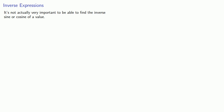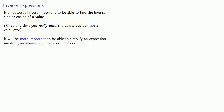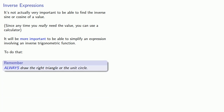It's not actually very important to be able to find the inverse sine or cosine of a value, since any time you really need the value, you can use a calculator. It will be more important to be able to simplify an expression involving an inverse trigonometric function. To do that, always draw the right triangle or the unit circle.